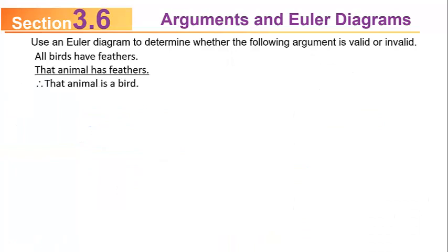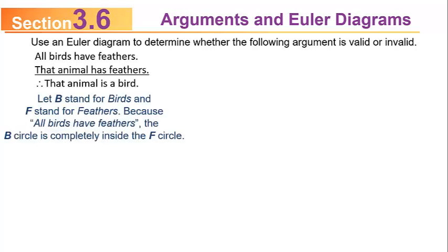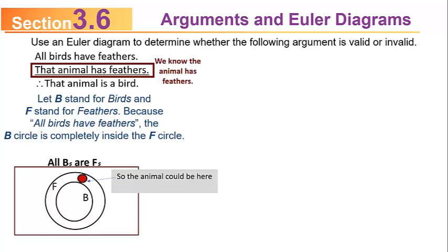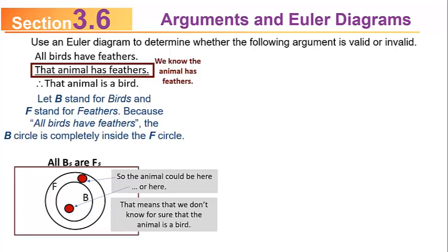Another example: all birds have feathers; that animal has feathers; therefore, that animal is a bird. Let B stand for birds and F for the feather circle. Because all birds have feathers, the B circle is completely inside the F circle. From the second premise, the representative dot has to be somewhere in the feather circle — but it could be inside the feather circle yet outside the bird circle, or inside both. That tells us we don't know for sure the animal is a bird, making this an invalid argument.